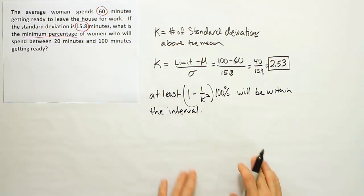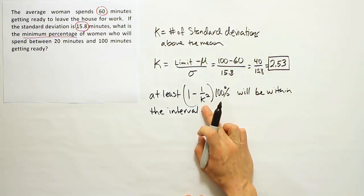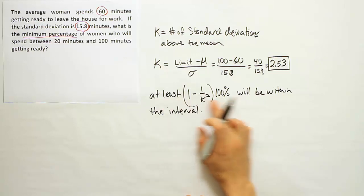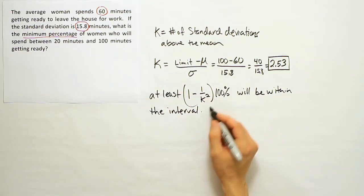Okay, so my task is now to plug in that k into the formula in order to determine the minimum percentage within 20 to 100 minutes. Okay, so let's plug that number in.